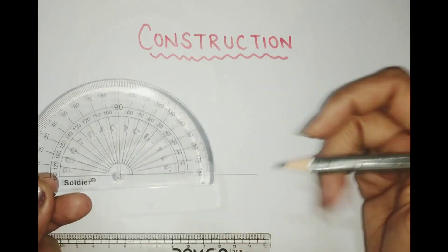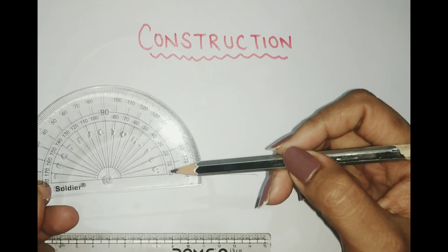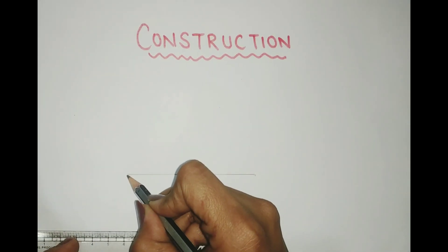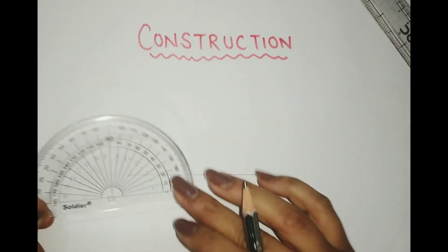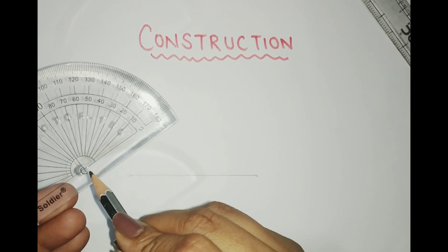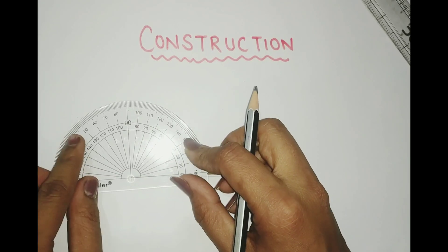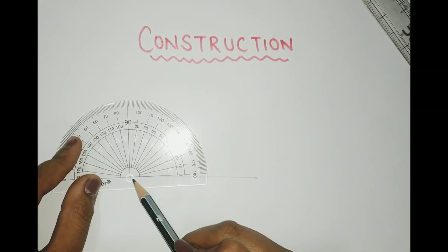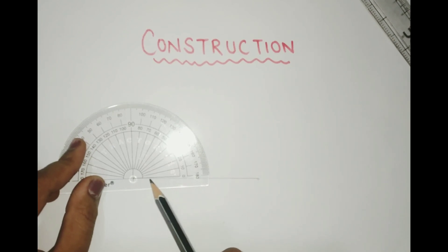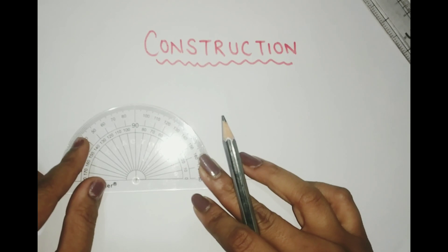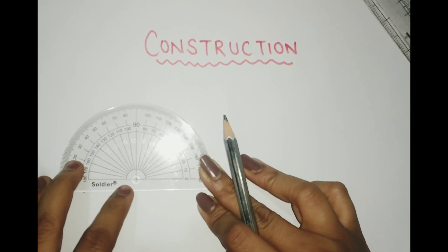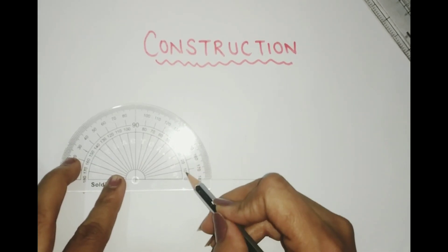The question is: I have to make certain angles. As you can see on the protractor, all the angles are given — 0, 10, 20, 30, 40, 50, 60, 70, 80, 90, 100, all the way to 180. There are two endpoints on the line segment. When placing the protractor, make sure to keep the center of the protractor exactly at one endpoint, and this line on the protractor exactly on the line you've drawn.